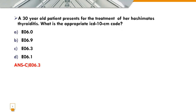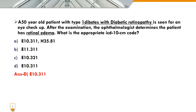Next question: a 30-year-old patient presents for treatment of Hashimoto's thyroiditis. What is the appropriate ICD-10-CM code? The answer is option C: E06.3.